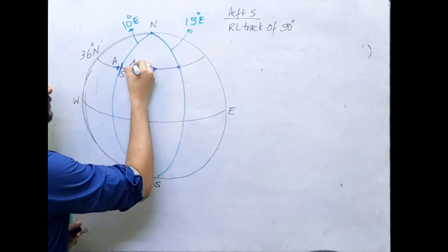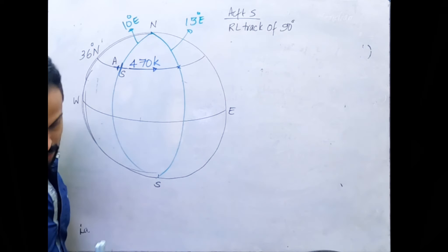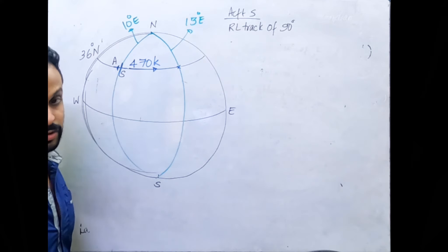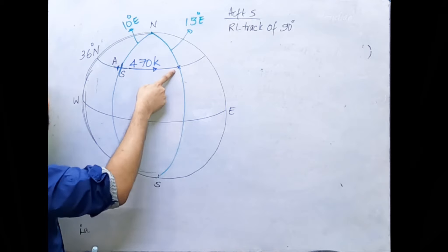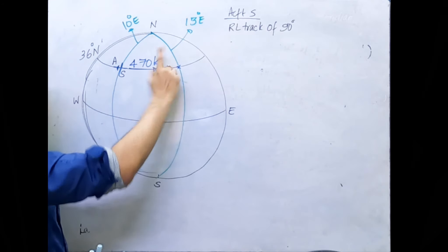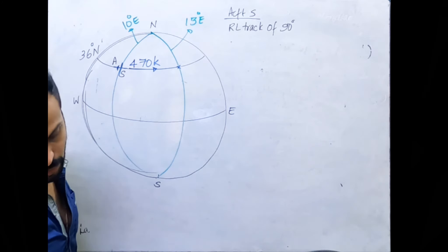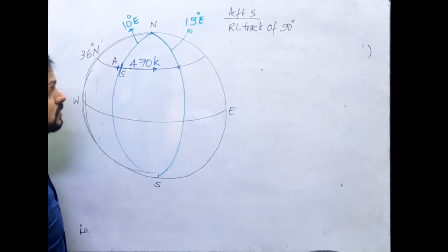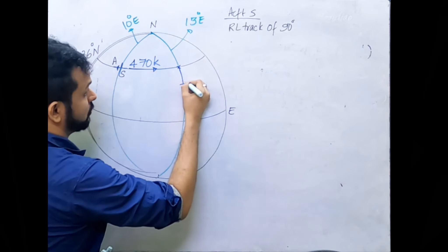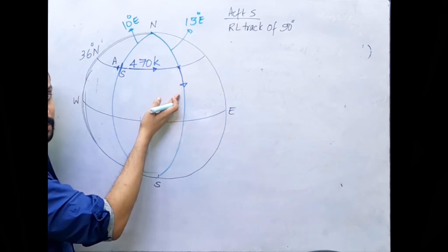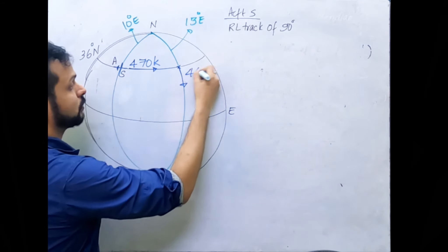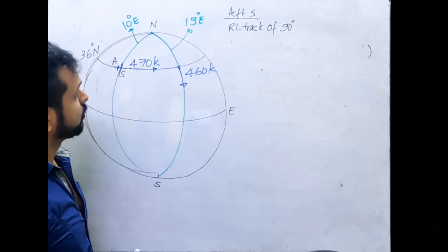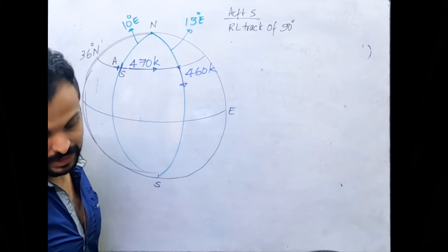The ground speed is 470 knots. After reaching the 13° East meridian, Aircraft S turns onto a track of 180° True — so that is a right turn — now tracking south at a ground speed of 460 knots. The ground speed reduced by 10 knots to 460 knots. The aircraft travels south from that point, though we don't yet know how far.